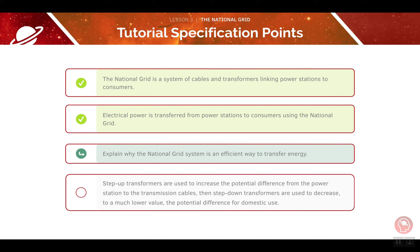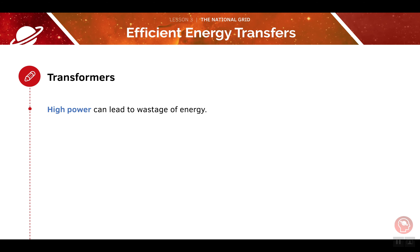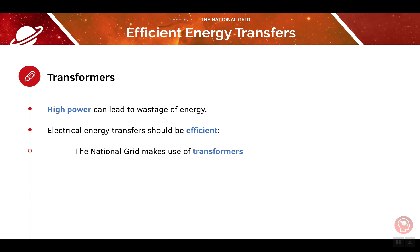Now let's move on to our next specification point: why the national grid system is an efficient way to transfer energy. When transporting so much electricity across the country, there is a huge risk of energy waste because the power is so high. Therefore, the national grid needs to keep electrical energy transfers as efficient as possible. To do this, the national grid makes use of transformers.